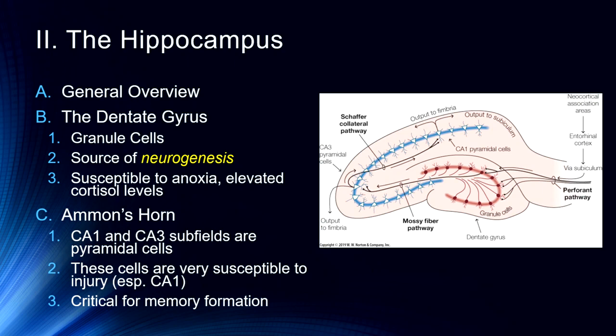What's important about the dentate gyrus is that it's a pretty sensitive area of the brain. It's very susceptible to anoxia — reductions in levels of oxygen — as well as elevated cortisol levels. One of the things we know about stress and memory is that when we undergo a great deal of stress, we get elevated cortisol levels, and that elevated cortisol then reduces neurogenesis in this part of the hippocampus and can also damage those granule cells. So trying to either prevent or repair that damage becomes very important — we think about how exercise, diet, and pharmacological treatments for depression can mitigate that damage to the dentate gyrus.